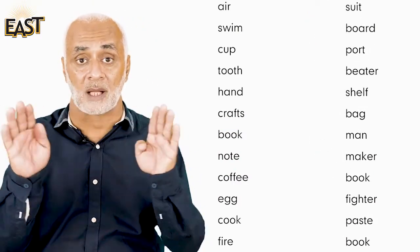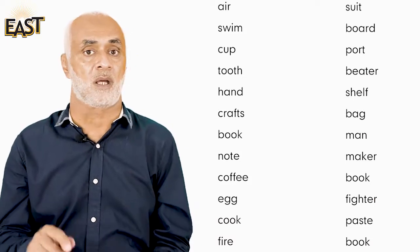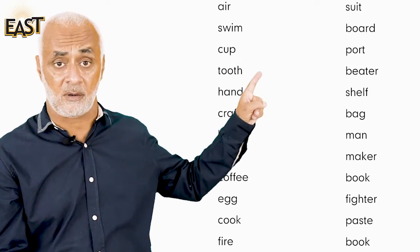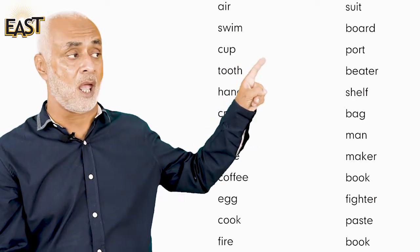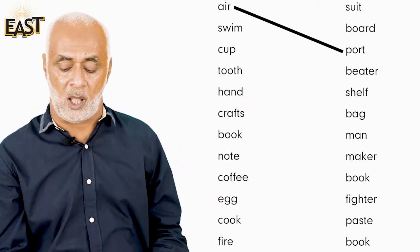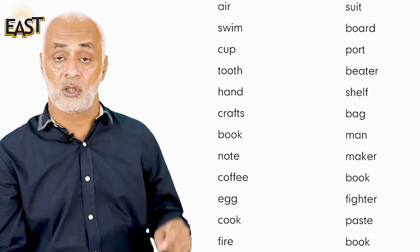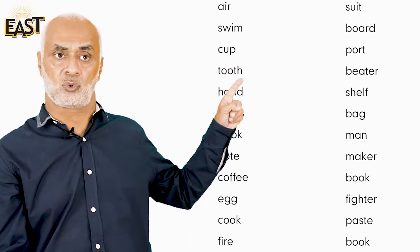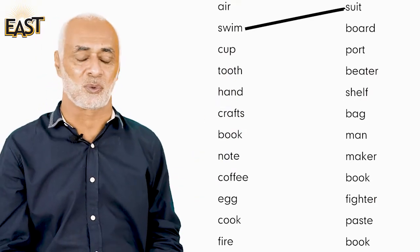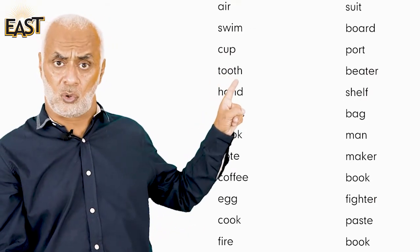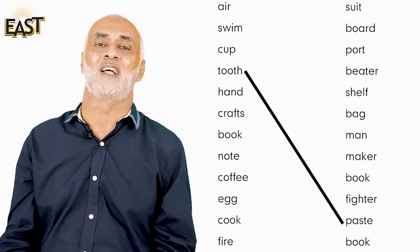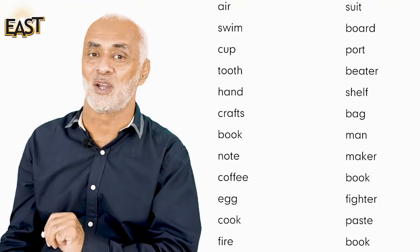Now start matching the words to make a compound word. For example, air from this list and port from this list makes airport. And swim plus suit makes swimsuit. Tooth plus paste makes toothpaste. I have done three for you.